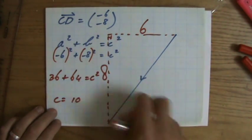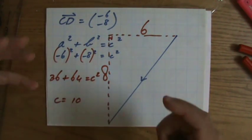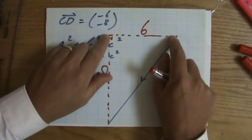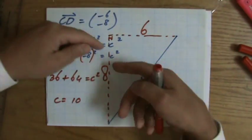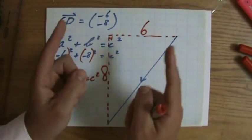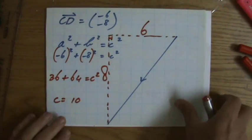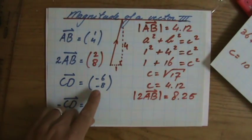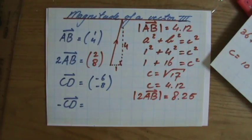So please, whenever you have those negatives, when you sketch it, ask yourself, how long is that? That's 6. That's not minus 6. That's 8. It's not minus 8. So the answer was 10. The magnitude is 10.